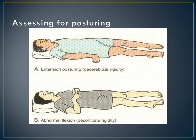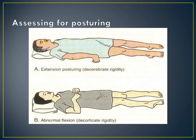Earlier, when we were talking about deeper painful stimuli, I said you could possibly get posturing — these are the two different types of posturing you need to look for. If someone's not responsive and you apply nail bed pressure, you're looking to see if they're having posturing. Decerebrate posturing is when they extend their arms down to their sides, extend their wrists, and their fists point outwards. Versus decorticate posturing, where the patient flexes — they actually bring their arms into their core.